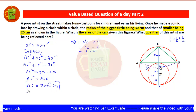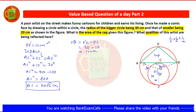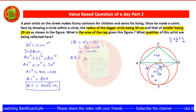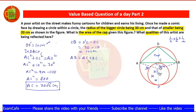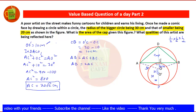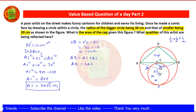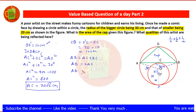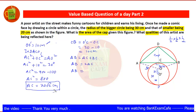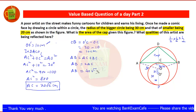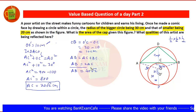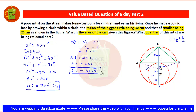Now we find the base AB. Since C is the midpoint of AB, AB equals AC plus BC, and AC equals BC. So AB equals 20√2 plus 20√2, which equals 40√2 centimeters. This is our base.